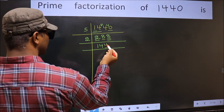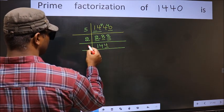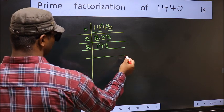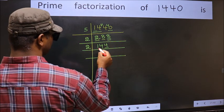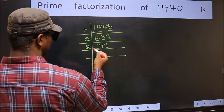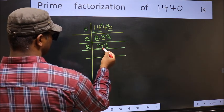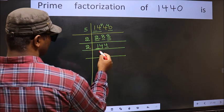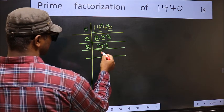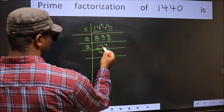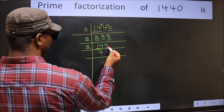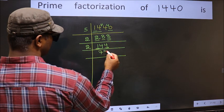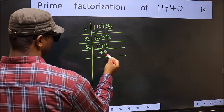Now the last digit 4 is even, so take 2. The first number 1 is smaller than 2, so take two numbers: 14. When do we get 14 in the 2 table? 2×7=14. The other number is 4. When do we get 4 in the 2 table? 2×2=4.